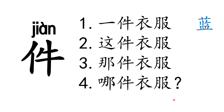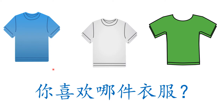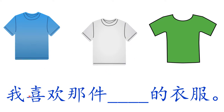To add colors: 一件蓝色的衣服 means 'a blue piece of clothing'. 这件红色的衣服 means 'this red clothing'. 那件黄色的衣服 means 'that yellow clothing'. 哪件衣服 means 'which clothing?' 你喜欢哪件衣服 means 'which clothing do you like?' To answer: 我喜欢那件颜色的衣服.